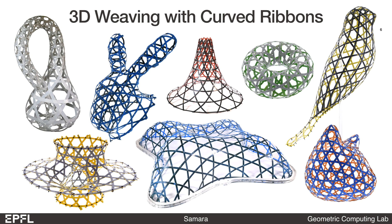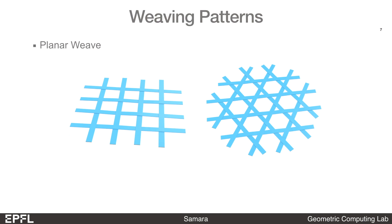To understand how it works, let's go back to the beginning and start with the basic principles of weaving. Here are the two main regular weaving patterns, the biaxial weave and the triaxial weave, named after the number of parallel families of ribbons in the weave. The ribbons are interlaced to increase the stabilizing friction forces.